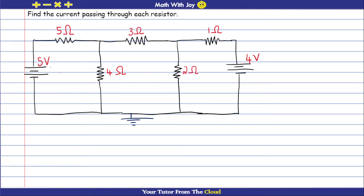I chose this bottom node as ground because it's connected to more components. I have four other nodes — one, two, three, four. This node I know: it's the five volts. This node I don't know, so we call it VA. This one I don't know either, so we call it VB. And this last node I know — it's going to be four volts.